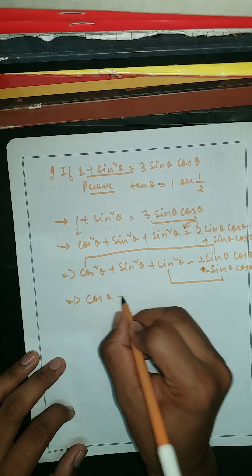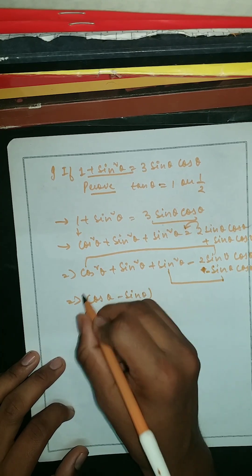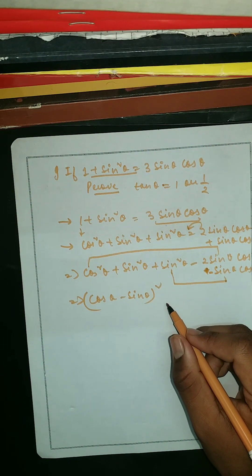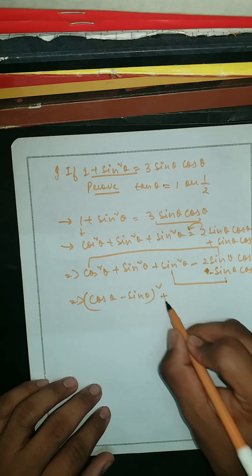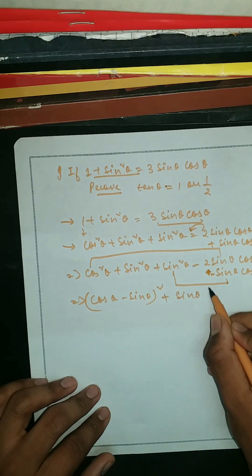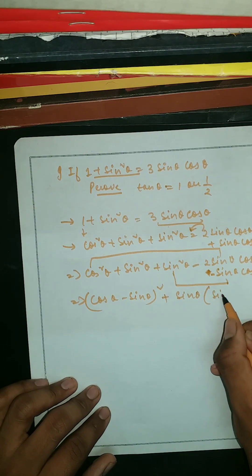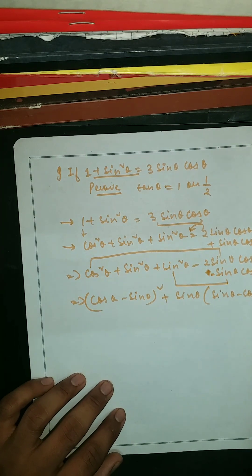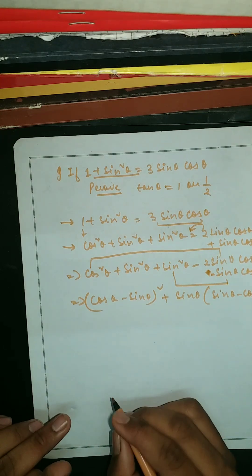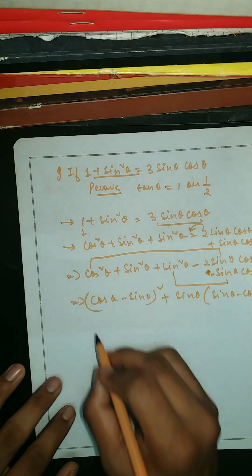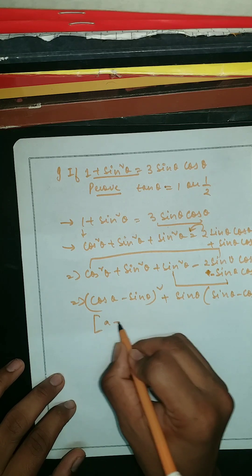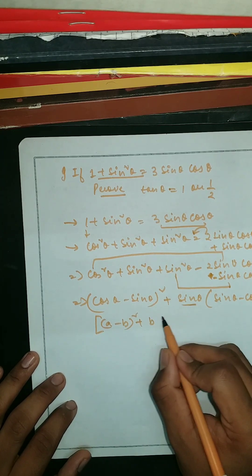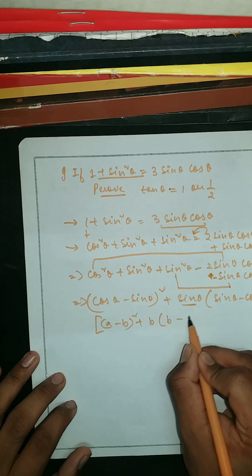This gives us (cosθ - sinθ)² plus sinθ(sinθ - cosθ), which is equal to zero. The formula we're using here is (a - b)² + b(b - a).